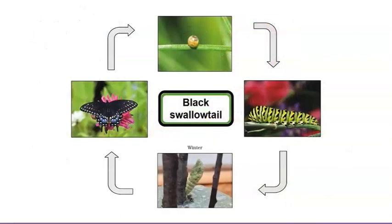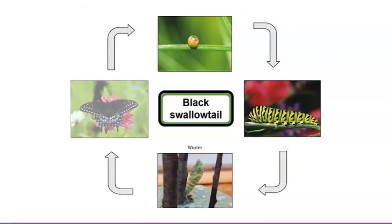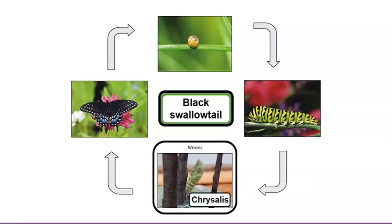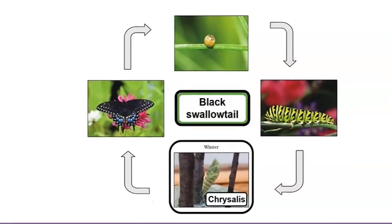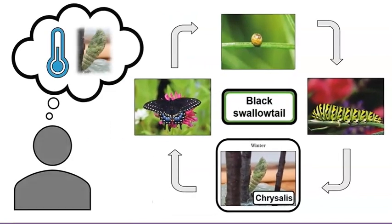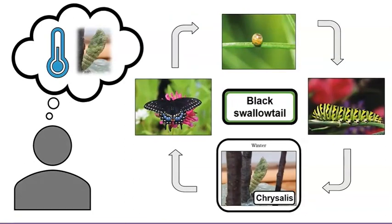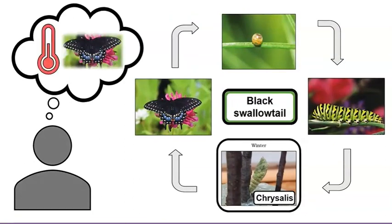Let's learn about another butterfly, the black swallowtail, and see what stage it's in during the winter. Interesting — this is the first butterfly we've seen so far that is in the chrysalis stage during the winter. How can the black swallowtail survive the cold winter months in this stage? Maybe the butterfly waits in the chrysalis stage until it is warm enough to come out.